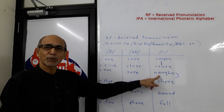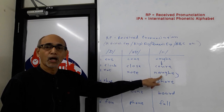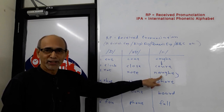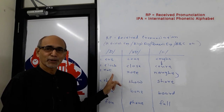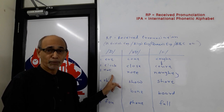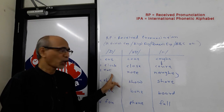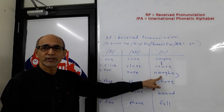Now why is it important to practice these sounds? Because if you speak the word NOTY as KNOTTY, then it will be a different word — you are using a different sound. KNOTTY is spelled K-N-O-T-T-Y, as in 'a knotty problem'. So KNOTTY is different from NOTY, as in 'he is a naughty boy'.